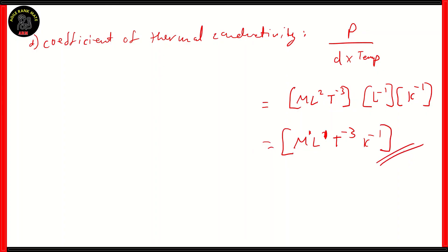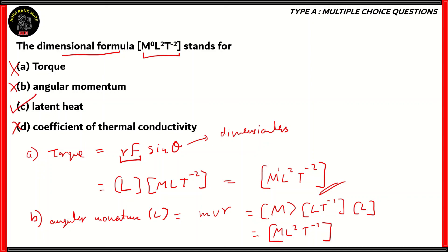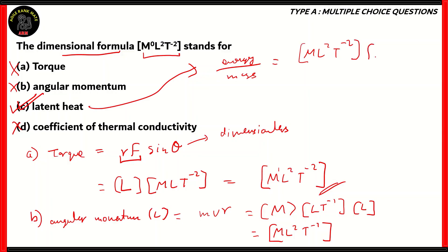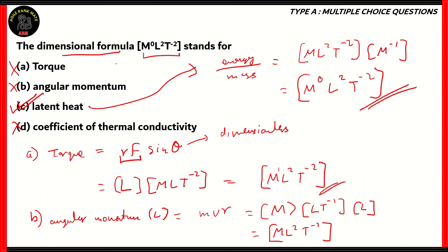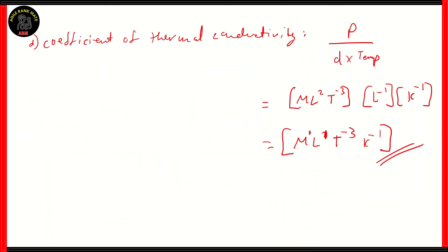Since the question's dimensional formula has no mention of the unit K (temperature), option D is also incorrect. The right answer is option C, latent heat, which is energy over mass. That gives M L² T⁻² × M⁻¹. The M¹ and M⁻¹ cancel out, leaving M⁰ L² T⁻². Therefore, option C, latent heat, is the correct answer with dimensional formula M⁰ L² T⁻², which relates to latent heat being energy divided by mass.